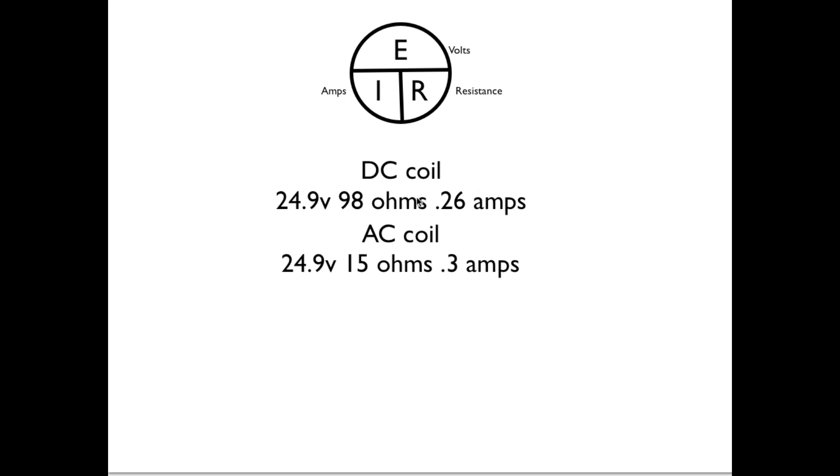If I took the volts and wanted to find the amps, I would put R for resistance into the voltage, so 98 goes into 24.9 and that should give me the 0.26 amps or close to it. If I wanted to know what the resistance was, I would take the 24.9 volts up here, divide the 0.26 amps into it, and I would get the resistance. That's going to work fairly close for the DC coil.